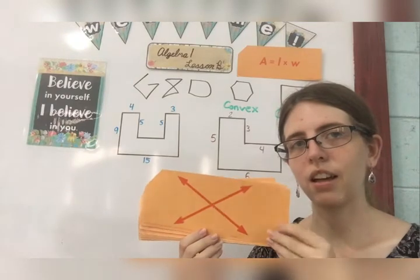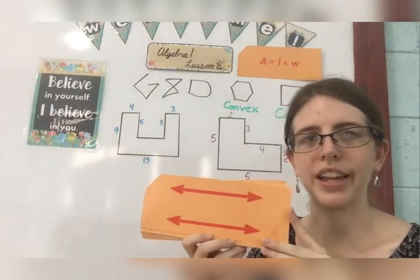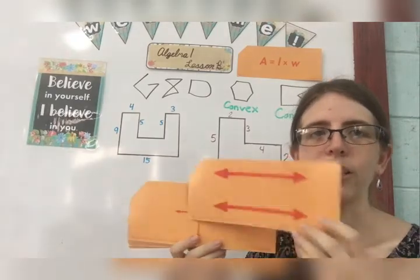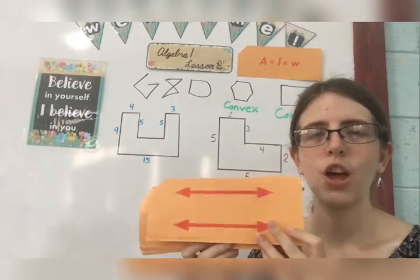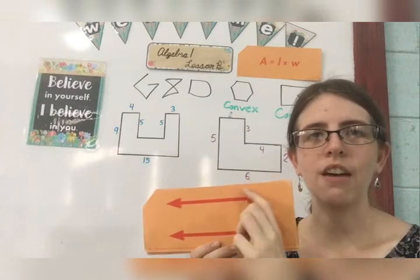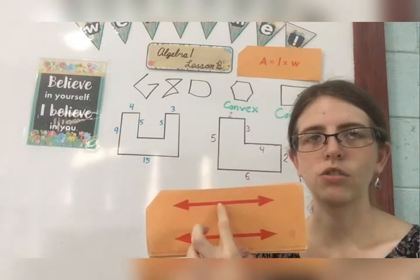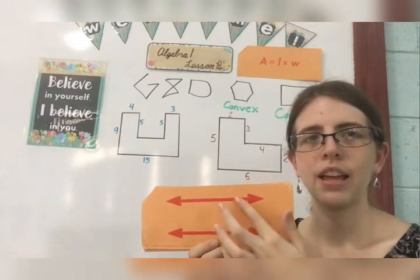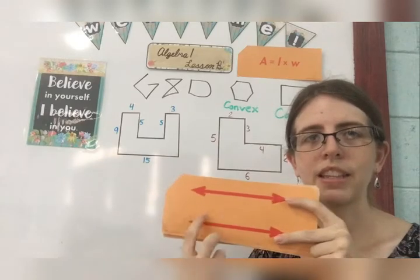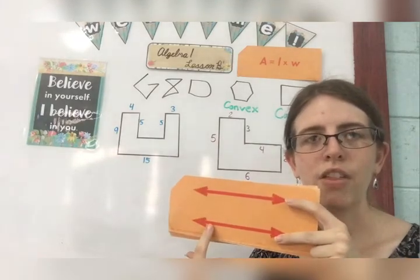Now these lines right here are called parallel lines. Parallel lines run so that they will never, ever, ever cross each other. They are totally straight. So if something is parallel, it means that every point of that line is equally distant from the other line.